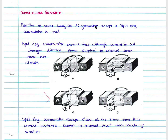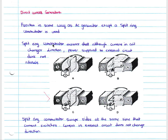For DC generators, we need to know that they function in the same way as AC generators, except that we now use a split-ring commutator instead of a slip ring commutator. Your split-ring commutator ensures that although the current in your coil changes direction, the power supplied to your external circuit does not alternate.